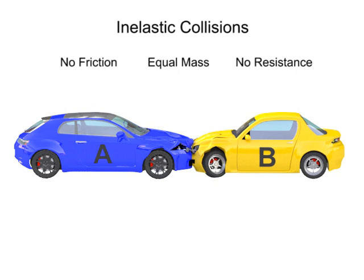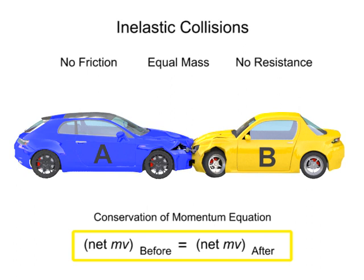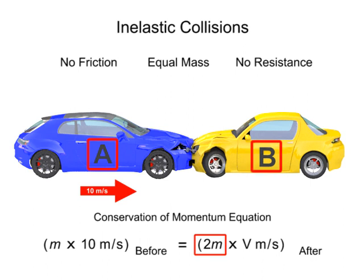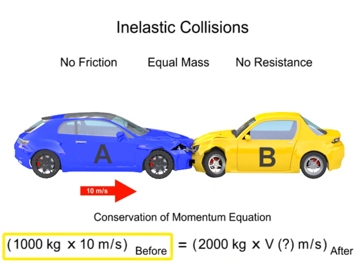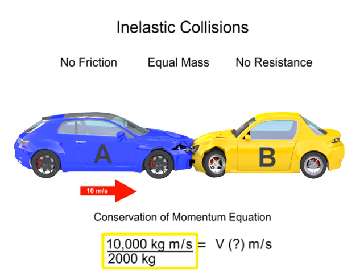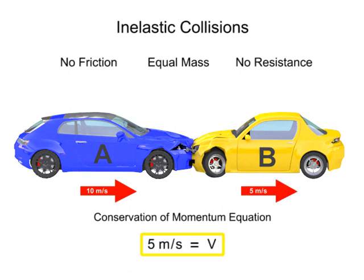The after-collision momentum is easily calculated using the conservation of momentum equation, where the mass of car A times its speed of 10 meters per second before the collision is equal to the mass of car A plus the mass of car B times the final velocity after the collision. Rearranging the equation to solve for the velocity after the collision gives 5 meters per second.